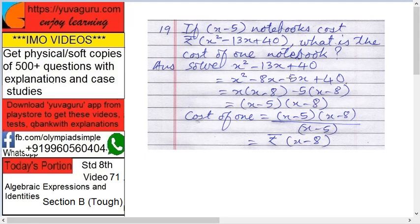Divide it so that in one of the factors, you get 5. So x squared minus 8x minus 5x plus 40.